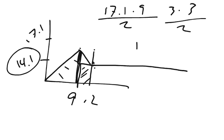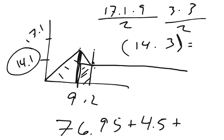And then finally, my rectangle has a length times width, a length of 14, a width of 3, and multiply that together to get that distance. So 17.1 times 9 divided by 2 is 76.95, plus my 3 times 3 is 9 divided by 2 is 4.5, plus my 14.1 times 3 equals 42.3. So you add all of that up, and you get your total distance traveled is 123.75 meters.